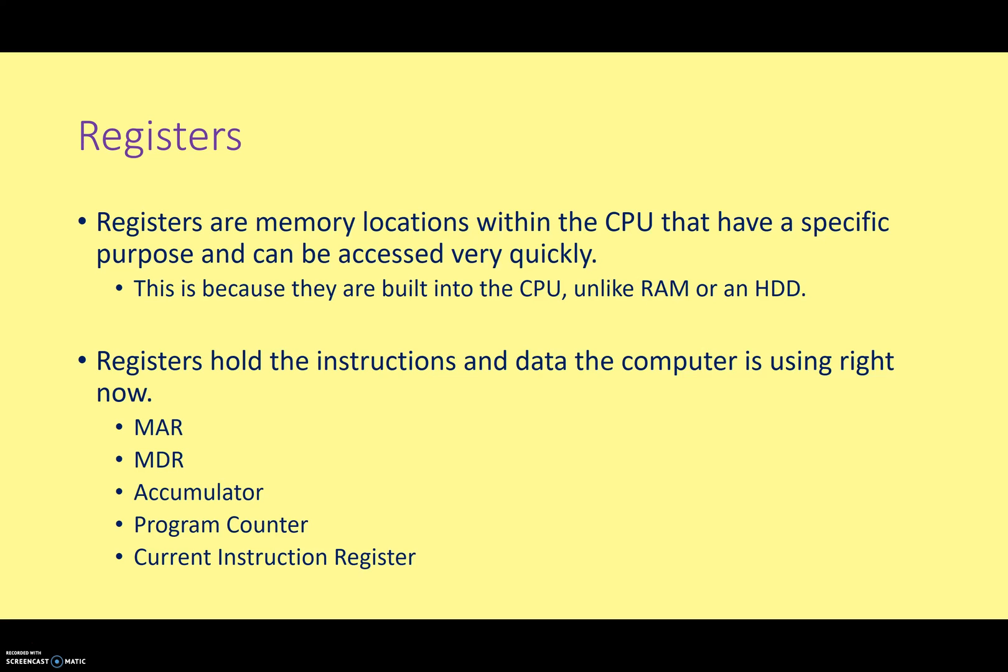And the registers that we've encountered so far are the memory address register, the memory data register, the accumulator, the program counter, and the current instruction register. You'll also have a lot of general purpose registers just for holding other little bits of information that the CPU needs while it's processing the instructions. But again, each of these registers is maybe only holding 64 bits of data or perhaps 32 bits of data with older computers. So that's only a few bytes.